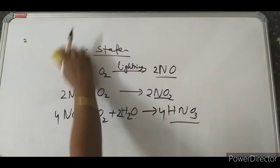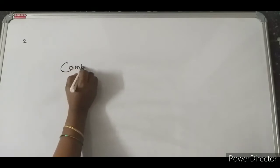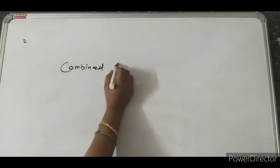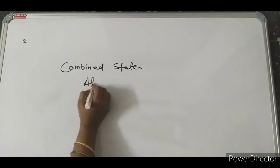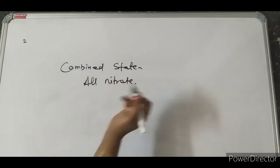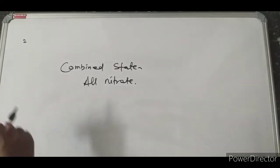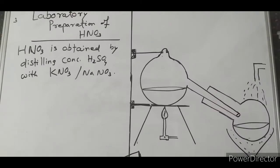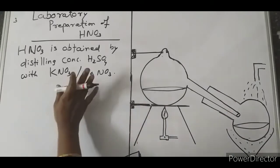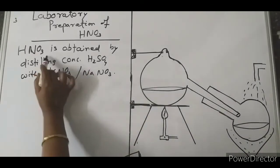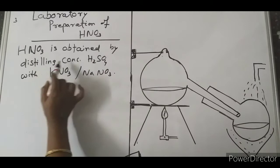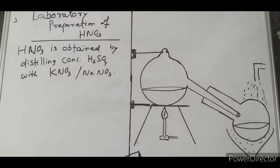In the combined state, HNO3 is present in the form of nitrates. Now let us look at the laboratory preparation of HNO3. Nitric acid can be obtained by distilling concentrated sulfuric acid with KNO3 or NaNO3 (sodium nitrate or potassium nitrate).